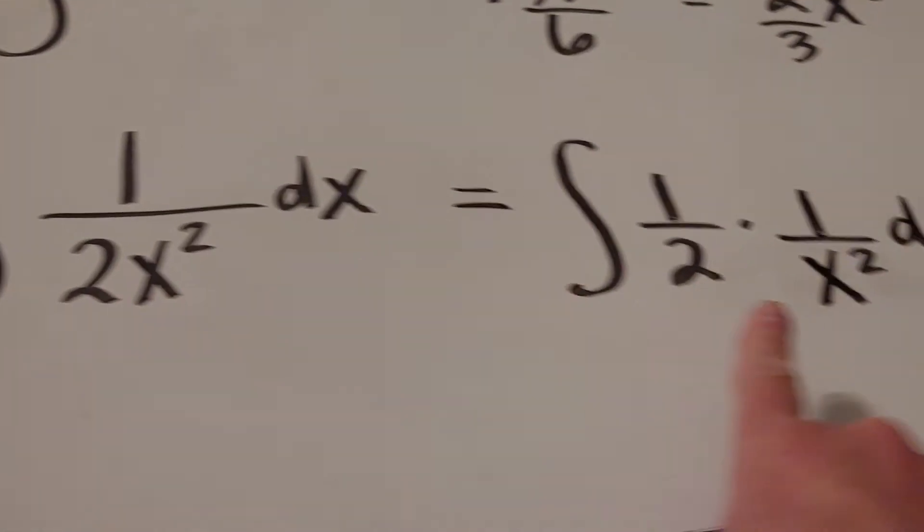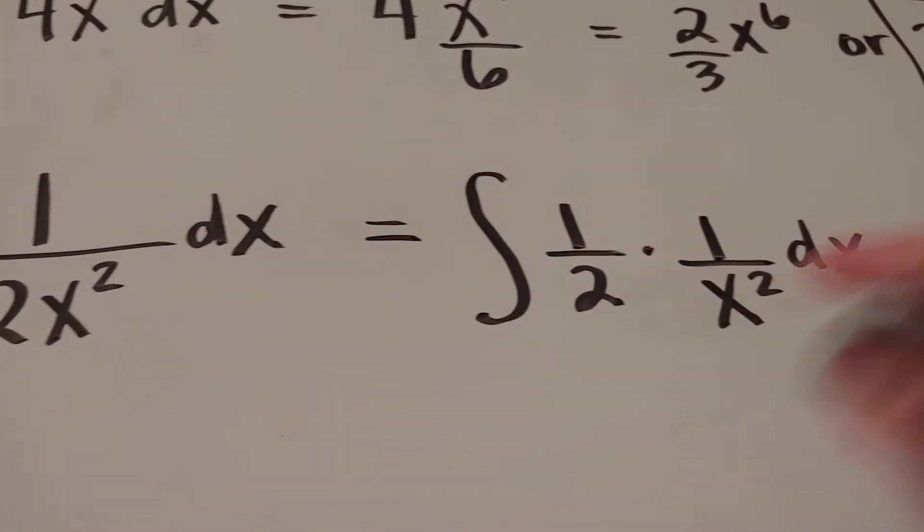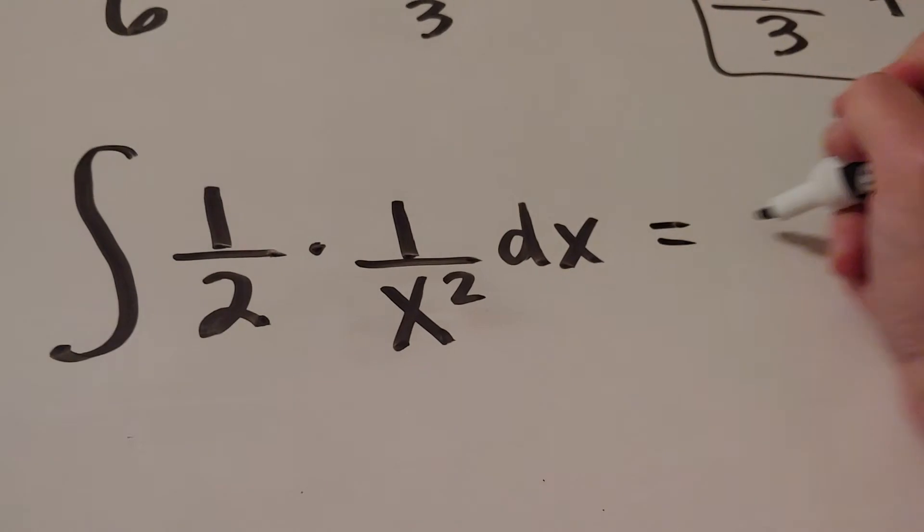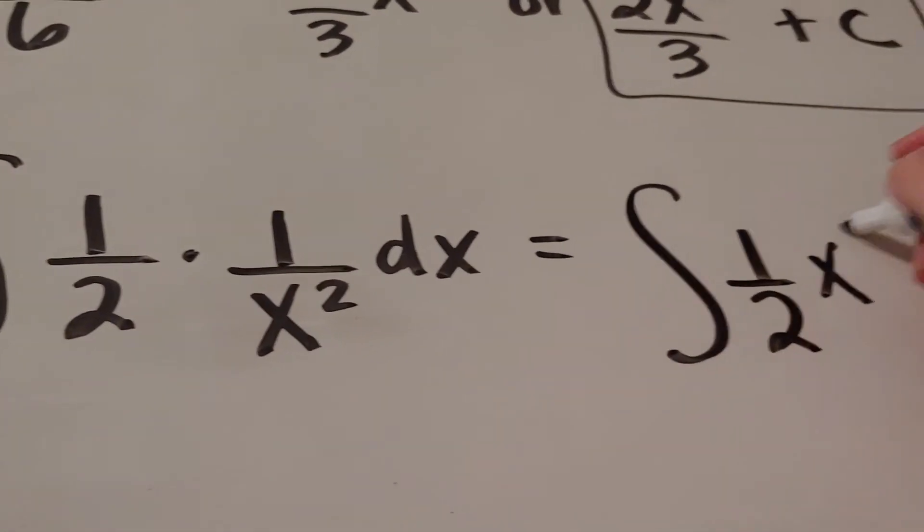Okay, so this is the same thing as this. So basically, it's the opposite of my squish. I'm unsquishing, if I can make up that word. Okay, now what I'm going to do is, I'm going to have 1 half x to the negative 2.